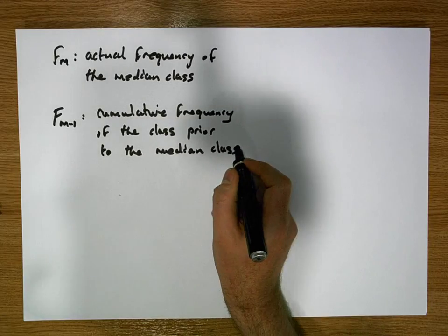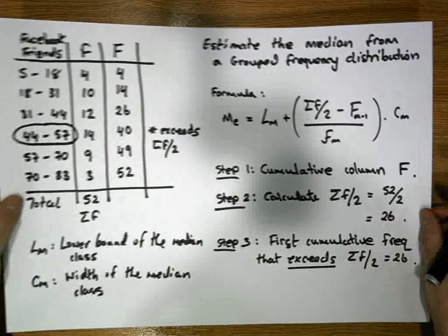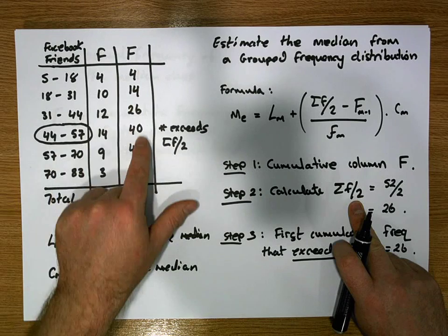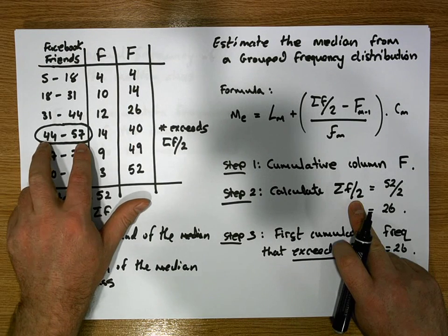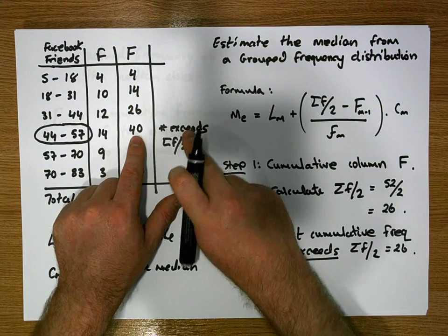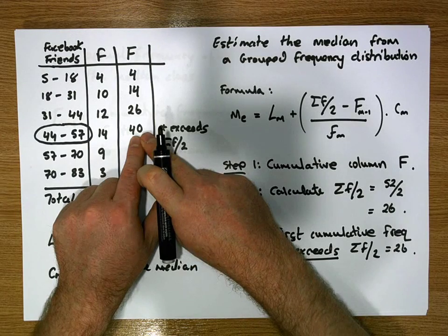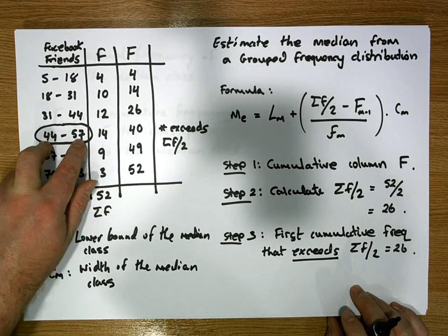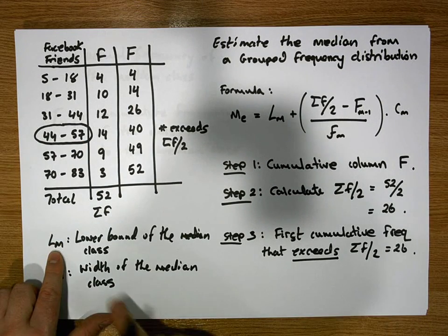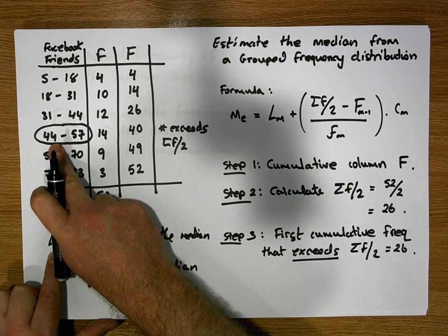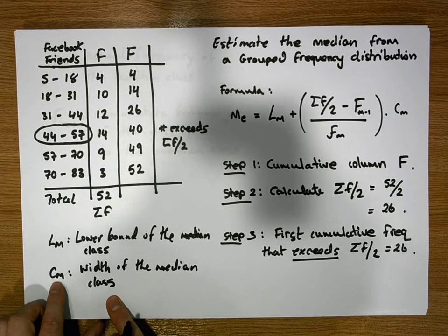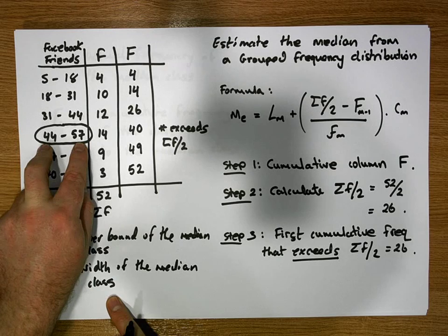We have just identified the median class using the sigma F over two key. The median class is 44 to 57 because the first cumulative frequency to exceed sigma F over two is 40. So L of M is the lower bound of the median class, so L of M is 44. C of M is the width of the median class, and we know that our class widths are 13, so C of M is 13.